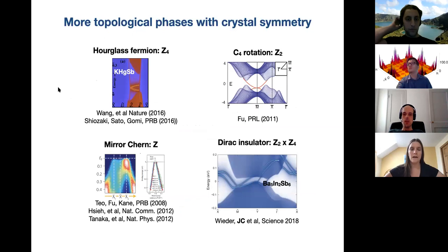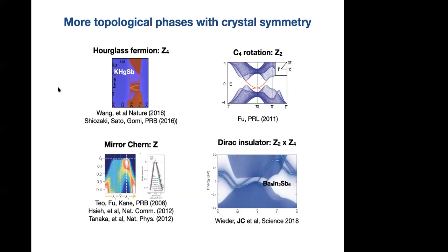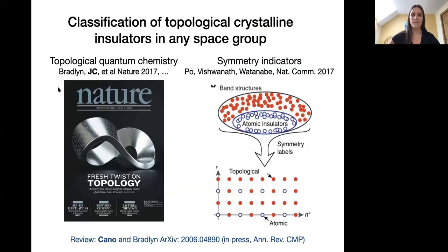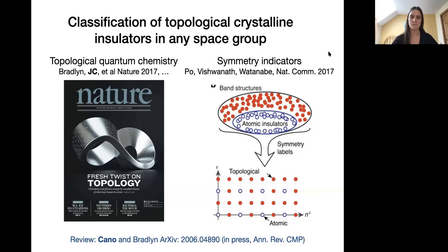In the past decade there have been several different types of topological crystalline insulators proposed. This classification emerged in a rather ad-hoc way — different phases were discovered without a unifying principle. One of the main advances has been the classification of topological crystalline insulators in any space group. This is work I did as part of a collaboration during my postdoc, and there were two parallel approaches with similar ideas.